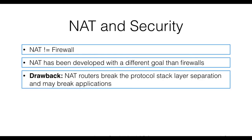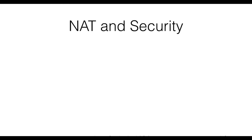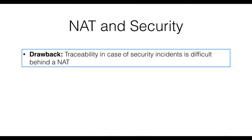NAT devices are also often criticized because they do not respect the protocol stack layer separation. NAT is implemented in routers, which are network-level devices; however, NAT manipulates both network-level and transport-level information in a packet. NAT might also interfere with the functioning of several applications, especially those relying on random ports. Thinking about forensics, a NAT can also interfere with finding the origin of malicious traffic. Once a network is behind a NAT, traceability of security incidents becomes a problem. Although one might rely on logging of NAT mappings, in practice this is not done, meaning that it is quite difficult to identify the host originating malicious traffic.